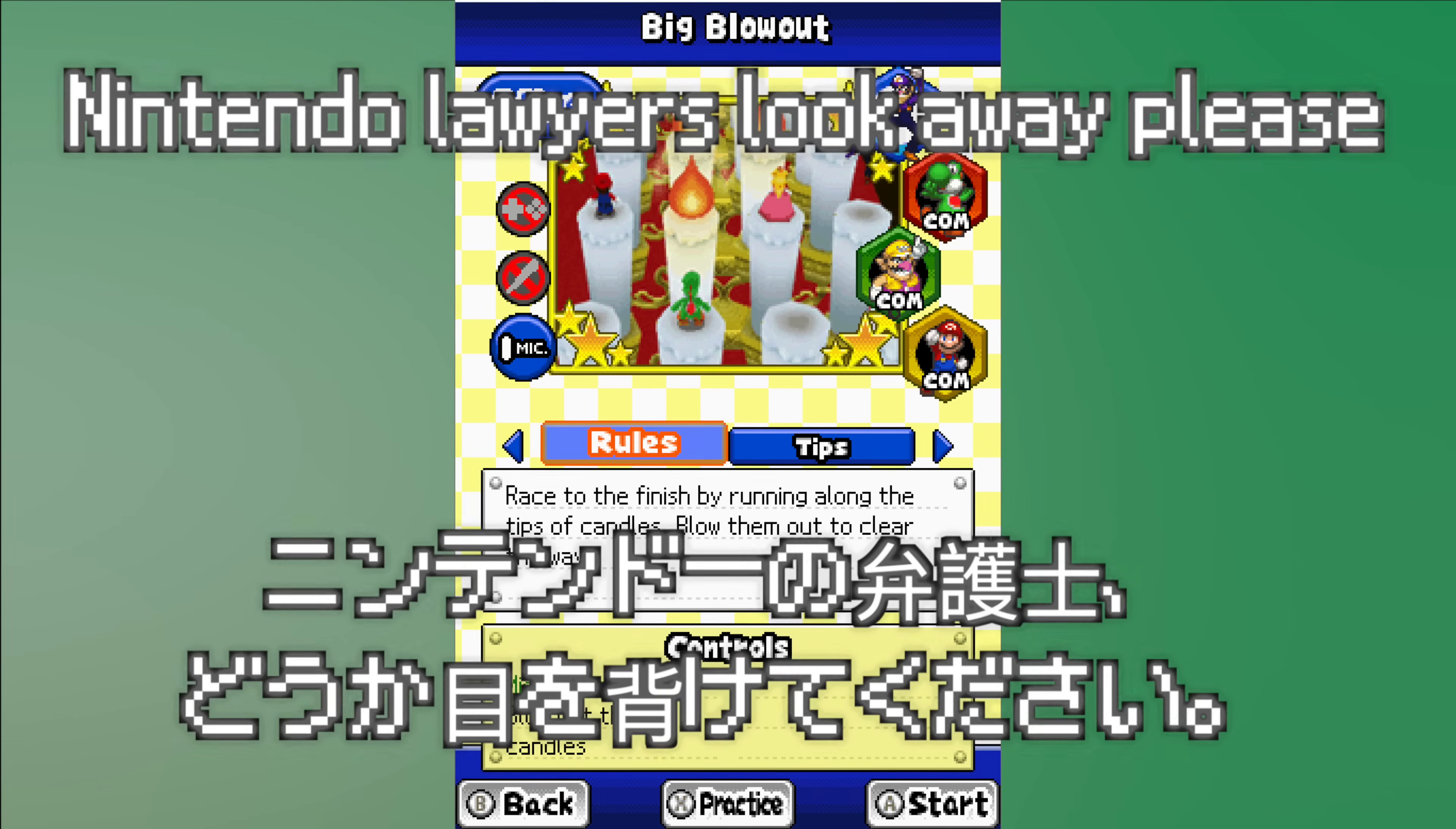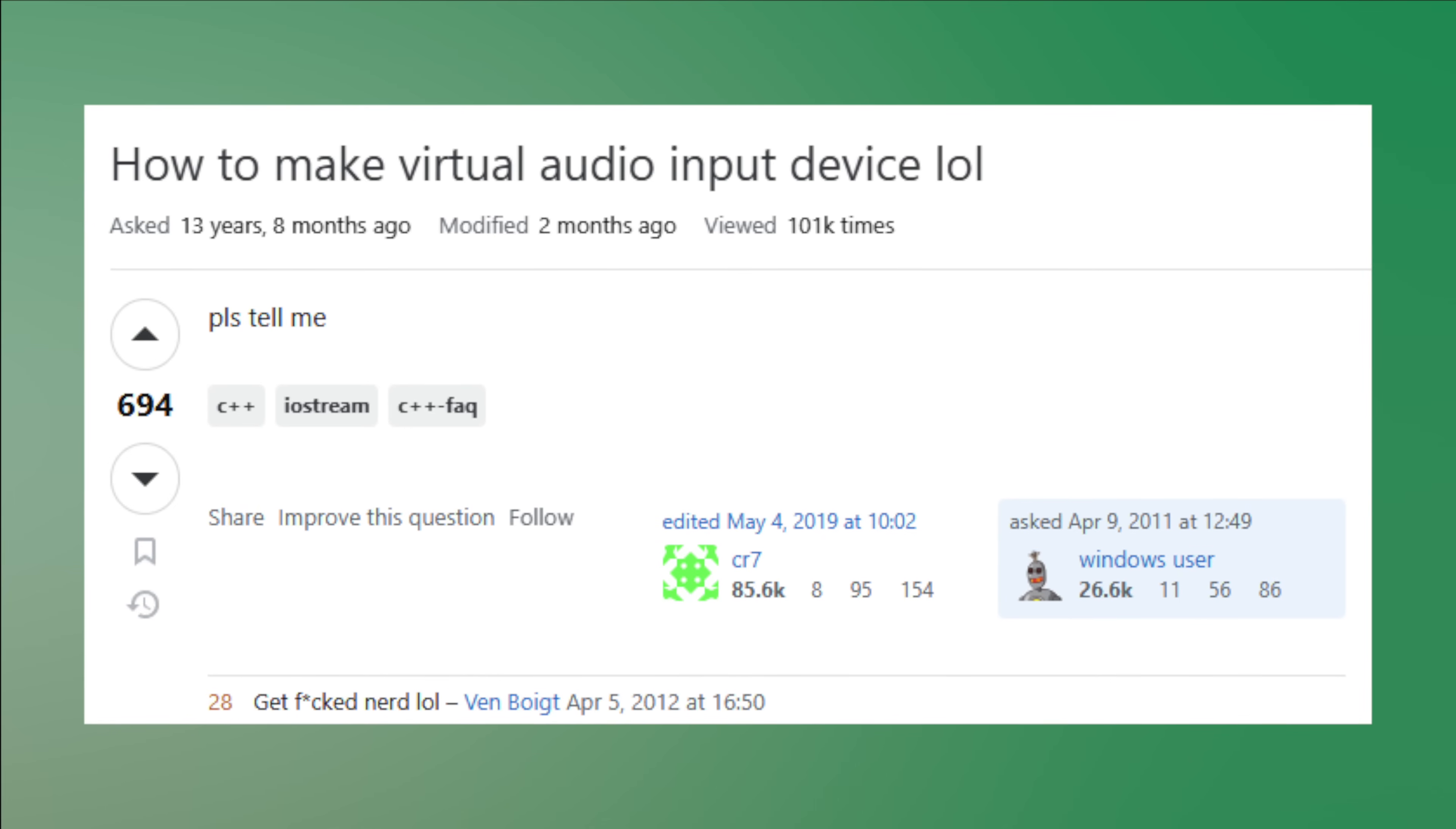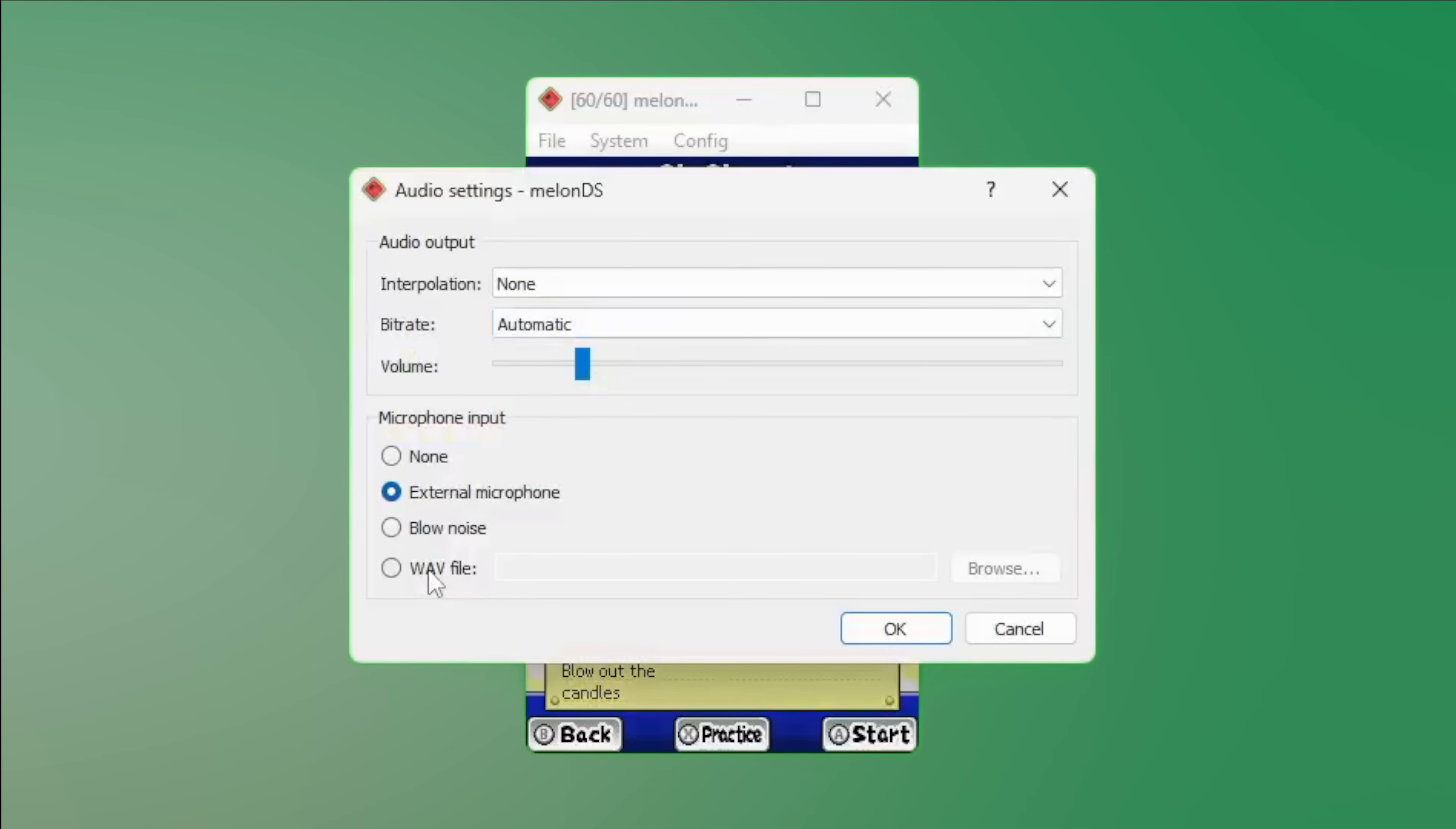Now since I'm running the software on my PC I don't exactly have a DS microphone. Initially I wanted to create a virtual audio input device but after doing some research that's a little out of scope. Luckily the emulator I'm using has a built-in solution for this problem and you can use any WAV audio file to actuate the internal microphone.